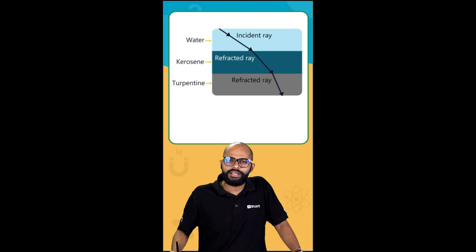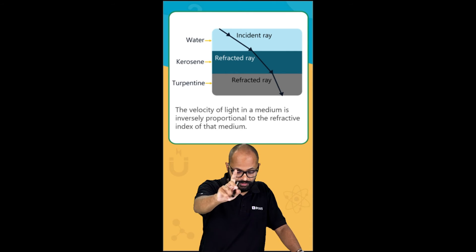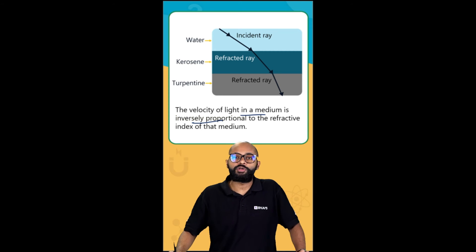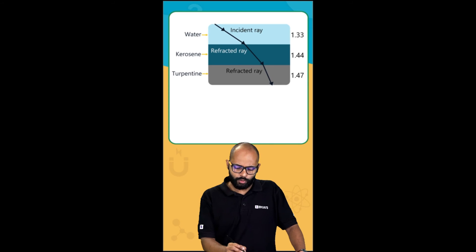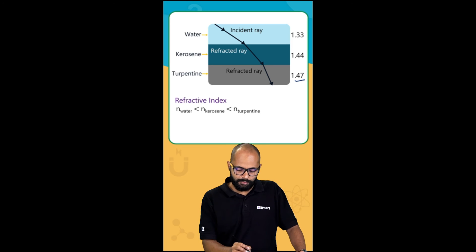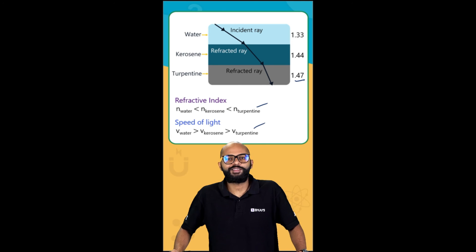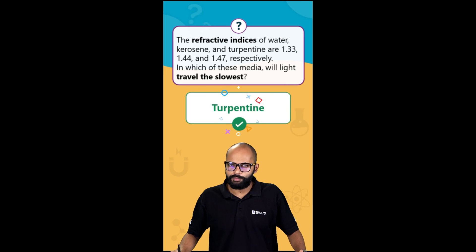Between water, kerosene, and turpentine, turpentine has the highest refractive index. We also know the velocity of light in a medium is inversely proportional to the refractive index. So 1.47 — the maximum refractive index — means the speed will be minimum in turpentine, and that is also our answer. The answer is turpentine.